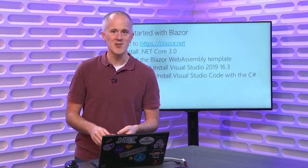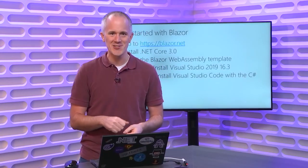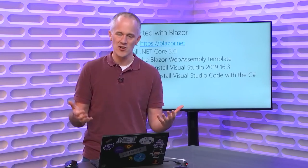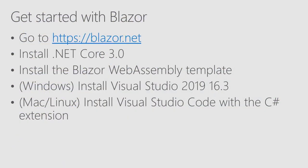How do you get started with Blazor? I recommend going to blazor.net — that's where you can find all the getting started instructions and the Blazor docs. You'll want to install .NET Core 3.0. If you're interested in playing around with Blazor WebAssembly, you'll need to install the Blazor WebAssembly template too. If you're on Windows, make sure you get Visual Studio 2019 16.3, which is now available today. If you're a Mac or Linux user, you can use Visual Studio Code with the C# extension. Visual Studio for Mac support is coming soon.